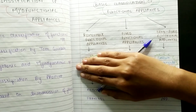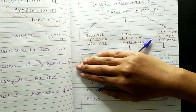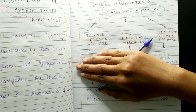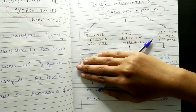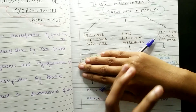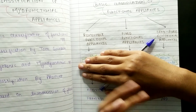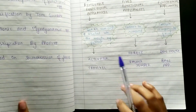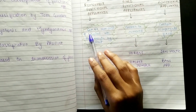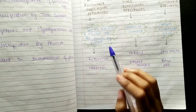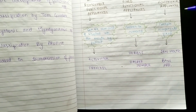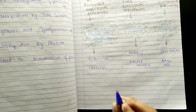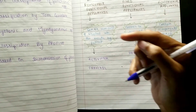Removable appliances can be removed and inserted into the mouth by the patient. Fixed appliances cannot be removed — certain components are fixed. Examples are very important; you need to know which appliances come in each class. In removable appliances, examples include Activator and Frankel.